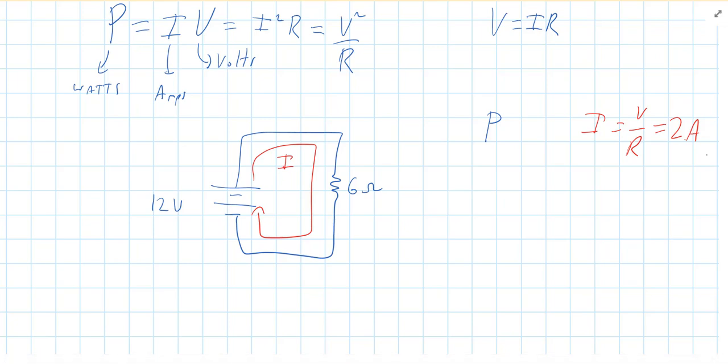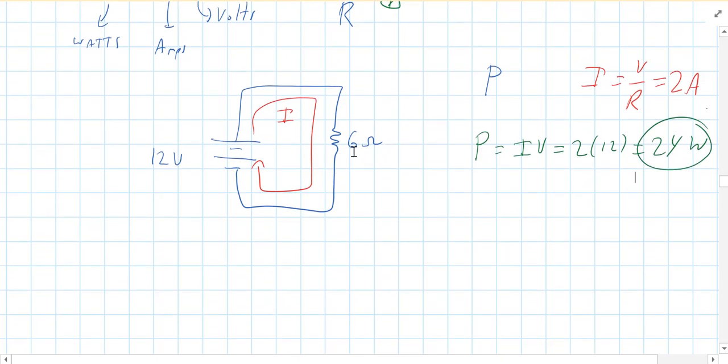Now as far as power goes, you can use any one of these versions now. We have everything in there. I'll use I times V. So power is I times V, which is 2 times 12, so it's 24 watts. So it would be like a 24 watt light bulb.